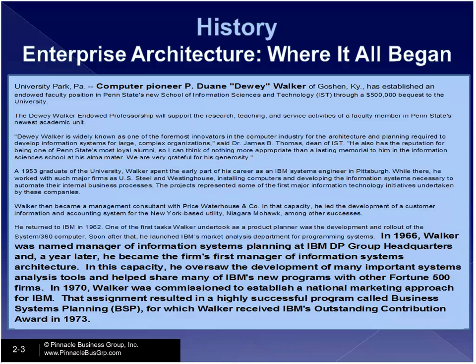IBM understood that if they helped the client build the blueprint of where they're going and where they are — the desired state and the as-is state — they could sell into that. Using the physical analogy, you need 24 two-by-fours, some paint and a hammer and nails. They understood the importance of architecture from a marketing perspective, and that assignment resulted in a highly successful program called Business Systems Planning — that's really the roots.